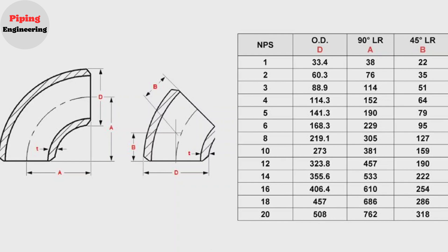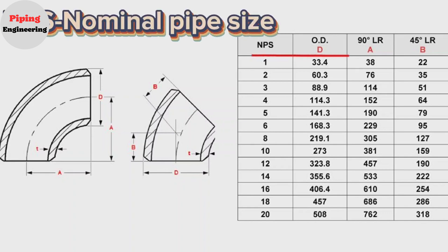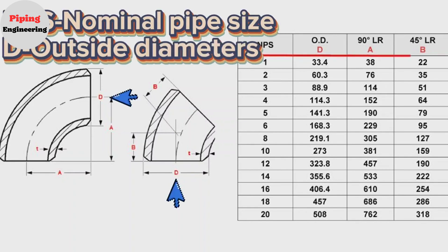Let's look at the size chart of elbows. Here, NPS means nominal pipe size. OD means outside diameter of elbow.